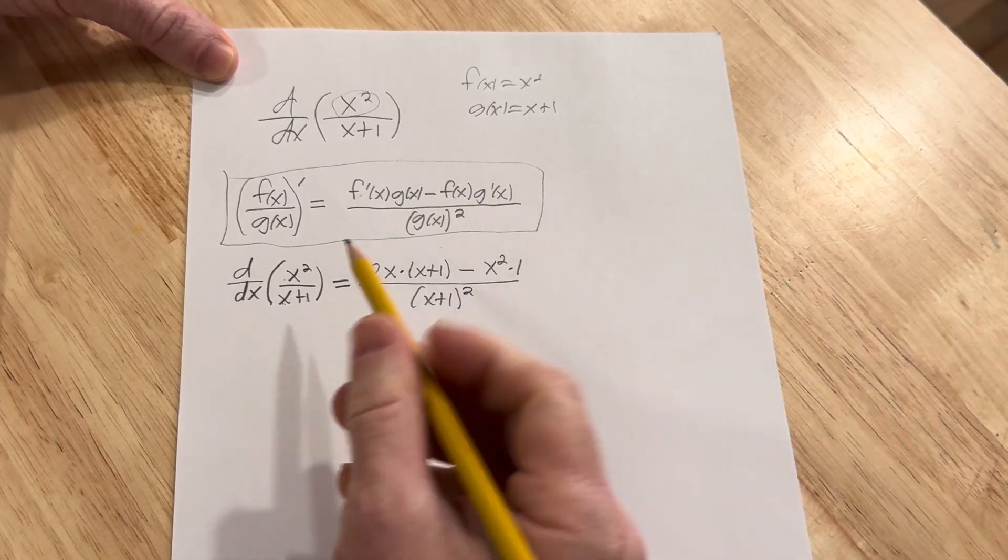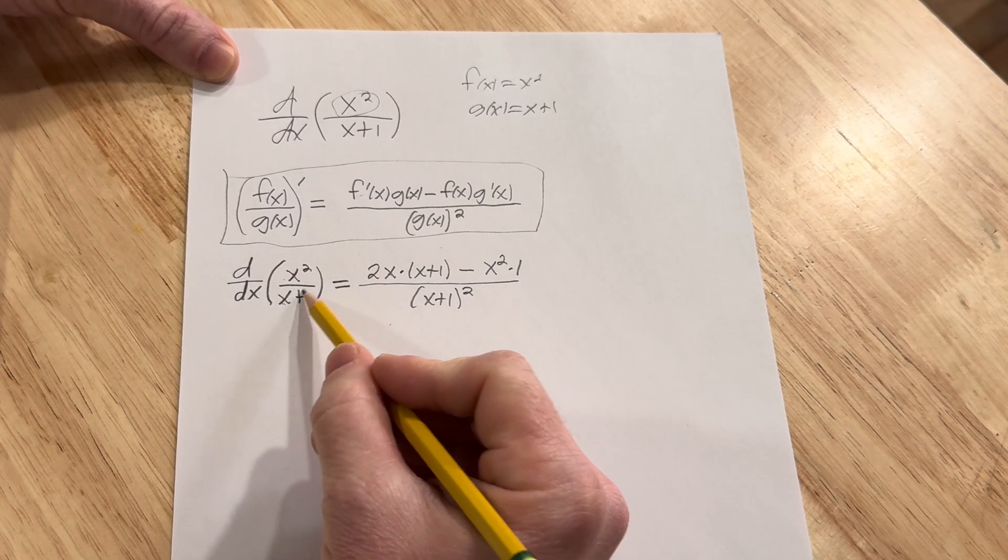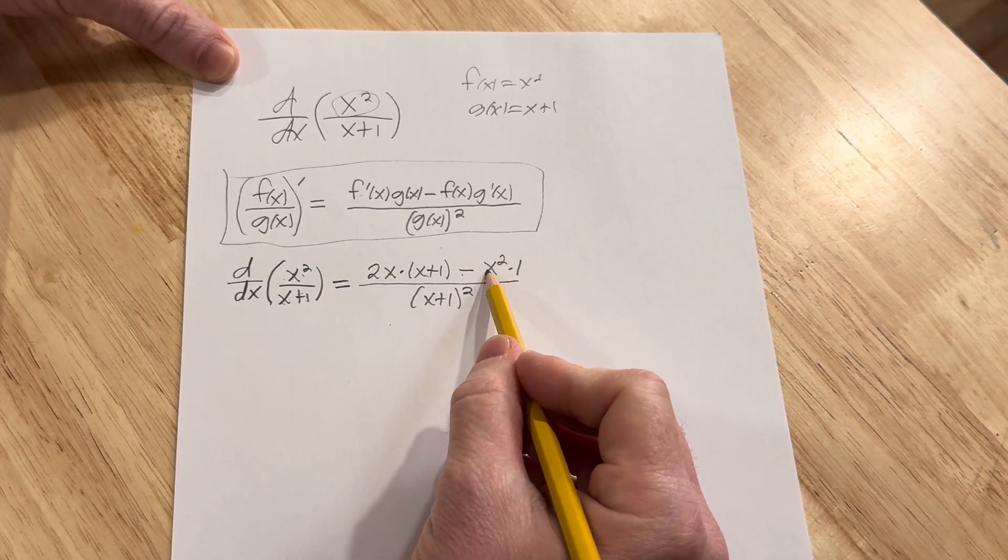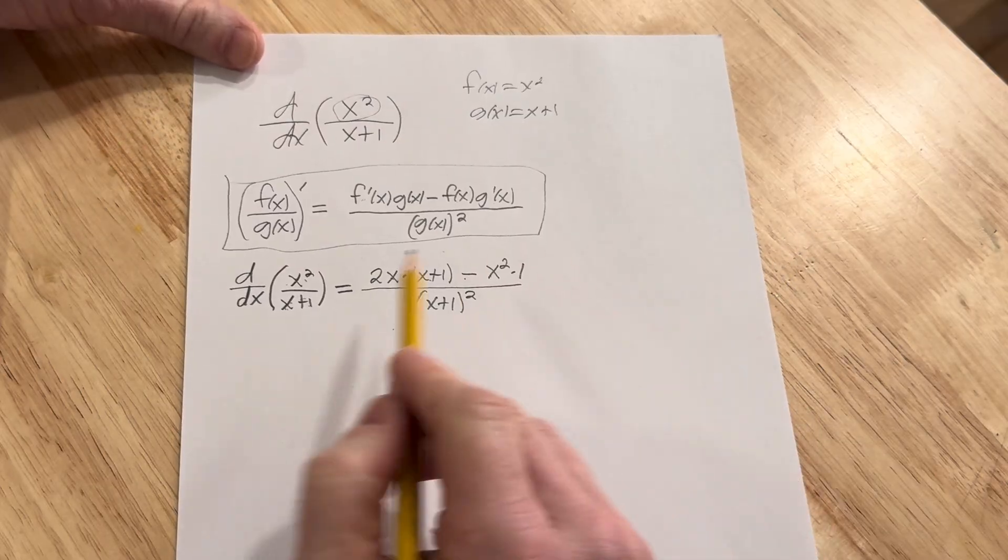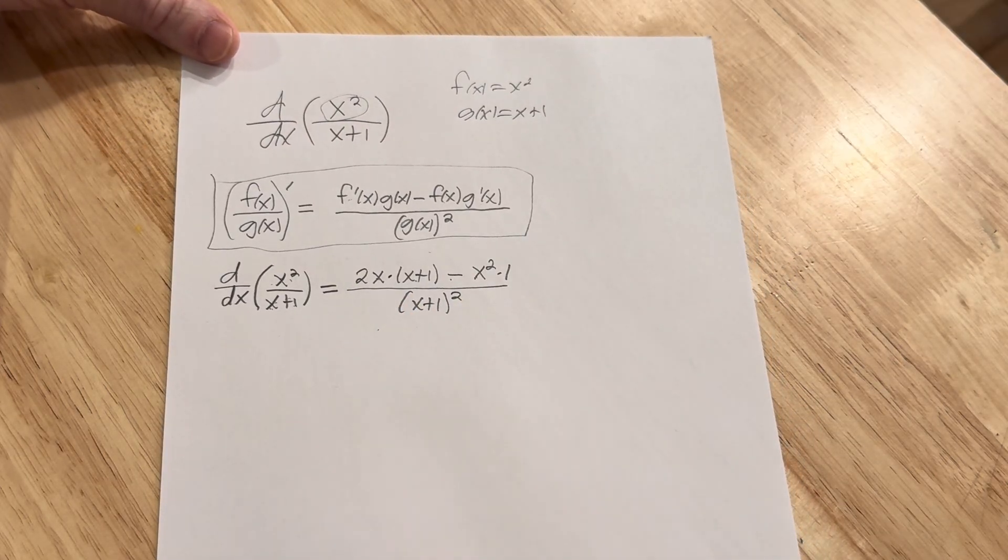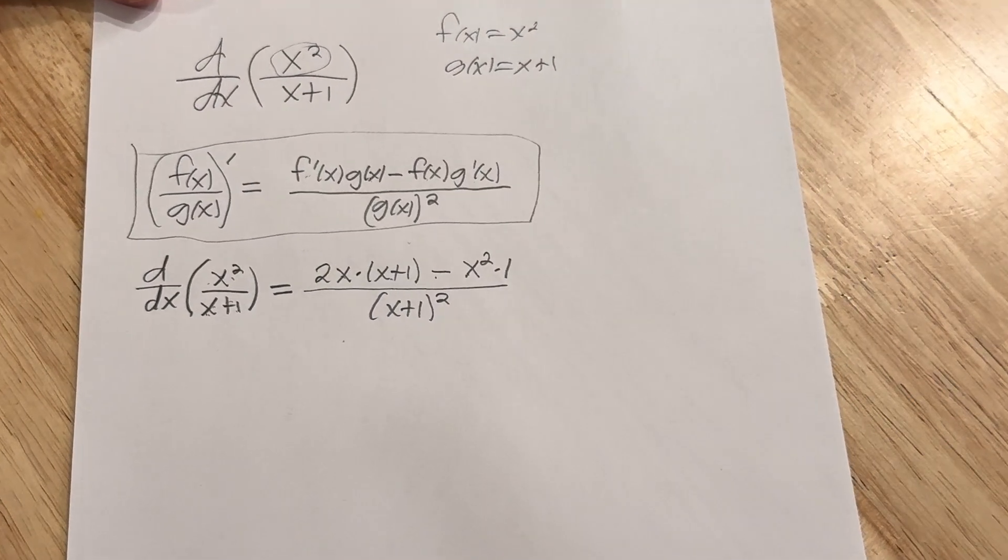Let's double check that. So it's the derivative of the top times the bottom minus the top times the derivative of the bottom, all over the bottom squared. We're not done, and the reason we're not done is we can still actually simplify here. I'm going to zoom in a little bit more so you can see better.